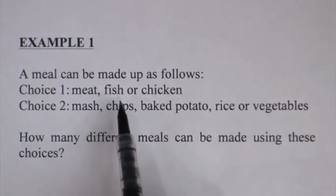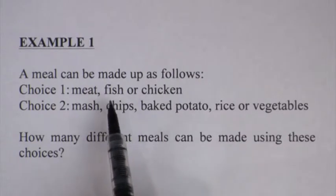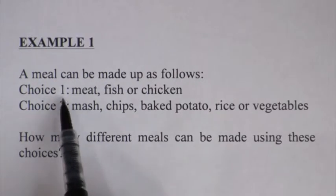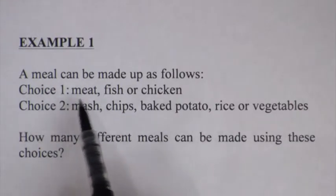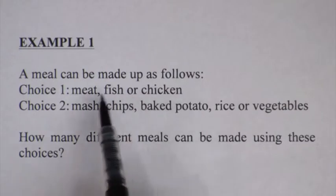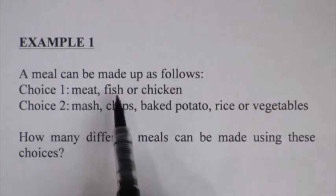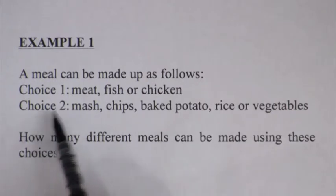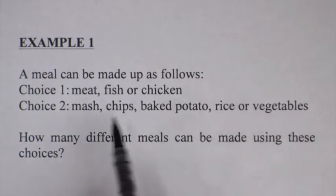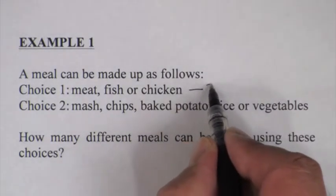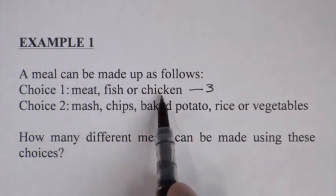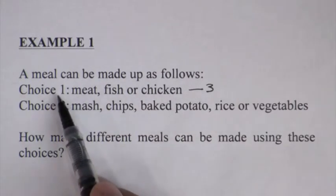If I can take you back to the definition or rule that we just spoke about — we called it choice one, or operation, or task. My first task is to select one of these meat products: meat, fish or chicken. Choice number two, or task two, is to select one of these. As you can see, choice one has three possibilities, so there are three ways to perform task one.